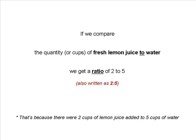If we compare the quantity or number of cups of fresh lemon juice to water, we get a ratio of two to five. That's because there are two cups of lemon juice added to five cups of water.